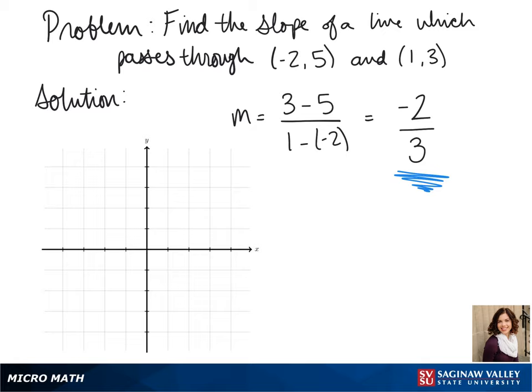If we plot these points, we see that we go down 2 and over 3 to get from negative 2, 5 to 1, 3. So that's what our line would look like.